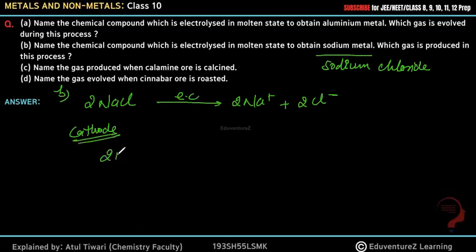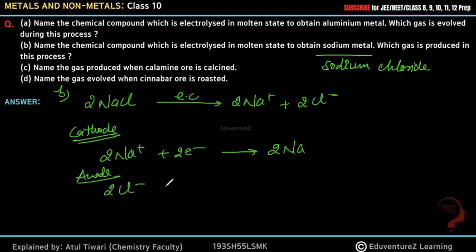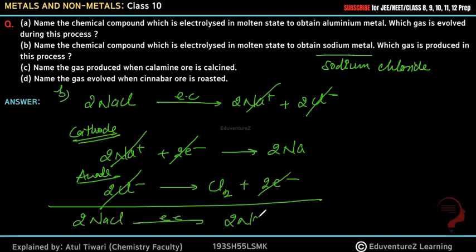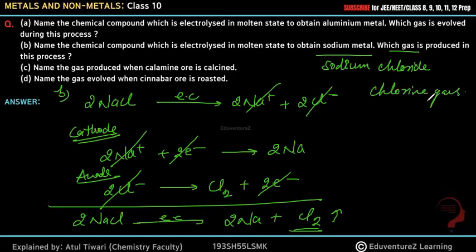At the cathode, 2Na⁺ accepts 2 electrons and converts into 2Na metal. At the anode, the negative Cl⁻ ions lose their electrons. Overall, when 2 electrons cancel, 2Cl⁻ and 2Na⁺ cancel, the electrolysis of 2NaCl gives 2Na + Cl₂. So chlorine gas is produced. Answer: sodium chloride, and chlorine gas is evolved. That was our second answer.